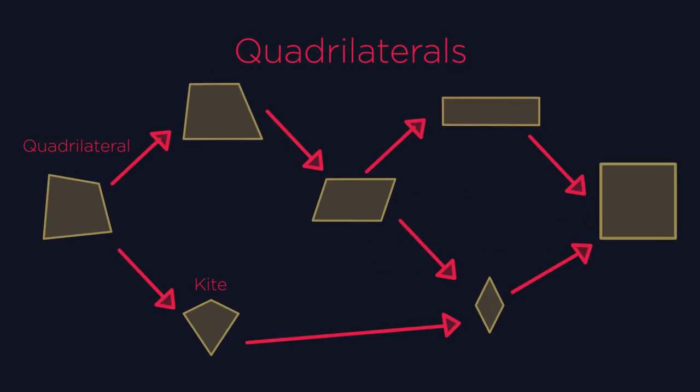So quadrilaterals are actually all very interconnected. By definition, a square is a quadrilateral, a trapezium, a parallelogram, a rectangle and a rhombus.